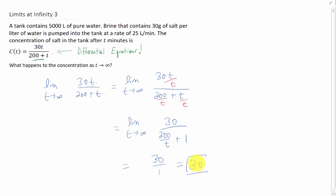We don't want to leave our units off of this. The concentration is going to be measured in grams per liter. And that sure is what we expect, because we are pumping a brine of 30 grams per liter into the tank.